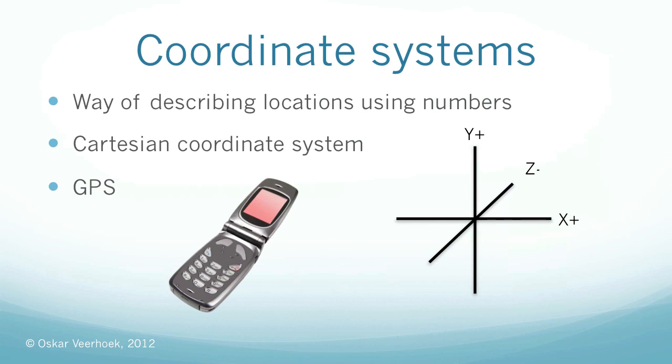Coordinate systems. A coordinate system is a way of describing locations using numbers. Essentially with a coordinate system you're creating a space that you can use to position objects. To do this in OpenGL we use the Cartesian coordinate system, which is basically a grid.